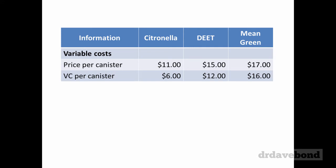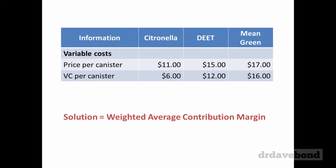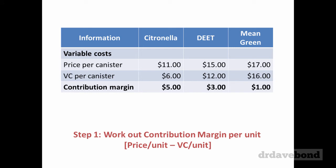The solution is a weighted average contribution margin. Once we've got the weighted average contribution margin we can just put it into the formula and work on it as normal. Step one: work out the contribution margin per unit for each product. We have $5 in contribution margin for Citronella per unit, $3 for DEET, and Mean Green — whilst it's the highest price product — has quite a high variable cost and only contributes $1 per unit.